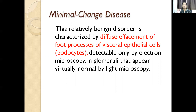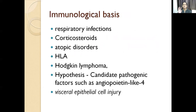The age group most commonly affected is two to six year old children, though there can be an adult form of minimal change disease. In the pathogenesis, minimal change disease has an immunological basis because there is a previous respiratory infection and there is response to corticosteroids — they respond very well. It is usually associated with atopic disorders and there is an HLA association.